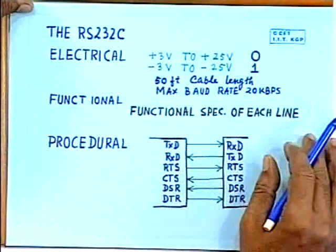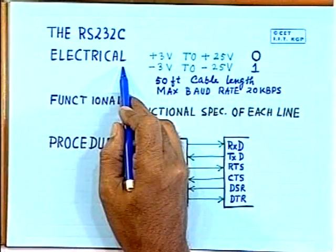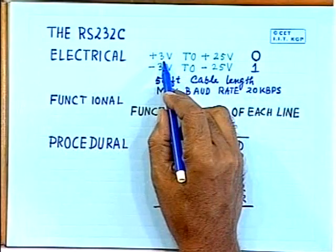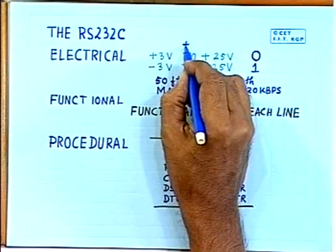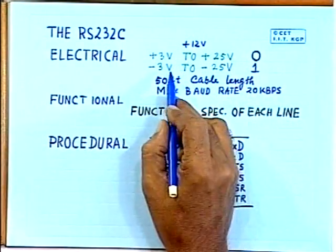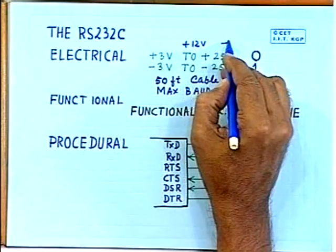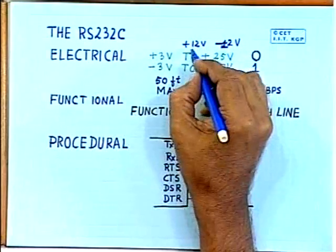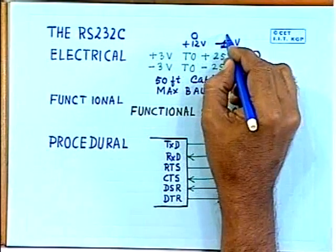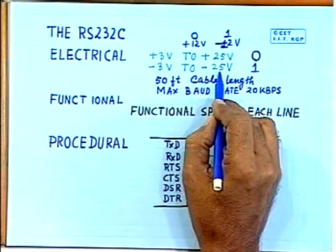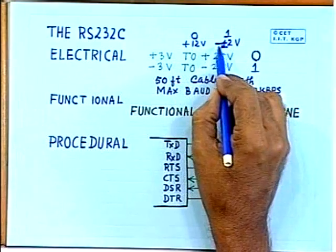The electrical component specifies voltage, current, cable length, and data transfer rate. In RS-232C: a 0 is represented by +3V to +25V (typically +12V), and a 1 is represented by −3V to −25V (typically −12V). So +12V represents 0 and −12V represents 1. It is not TTL compatible — you must note this point.